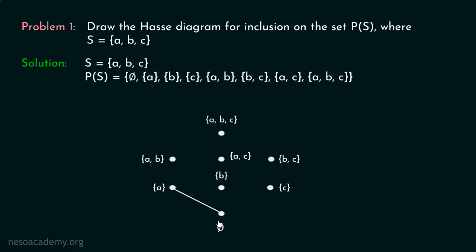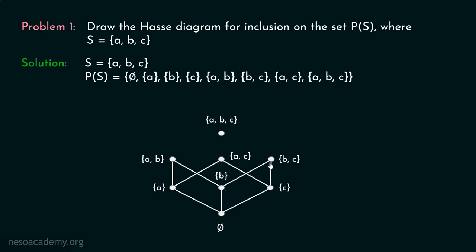We can draw an edge from phi to {A}, {B}, and {C}, because phi is a subset of each of those sets. Also, we can draw edges from these single-element vertices upward. Sets with elements A, B, and C are the top elements right now. We draw edges from these three vertices. For example, {A} is a subset of {A,B}, so we can draw an edge from {A} to {A,B}. {A} is also a subset of {A,C}. And {C} is a subset of {A,C}.